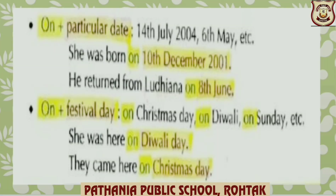On is used to mention a particular date, such as 14th July 2004, 6th May, etc. For example: She was born on 10th December 2001. Here you can see preposition 'on' and a particular date, that is, 10th December 2001.